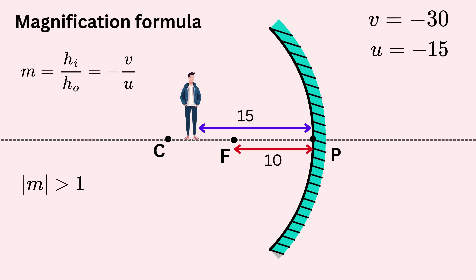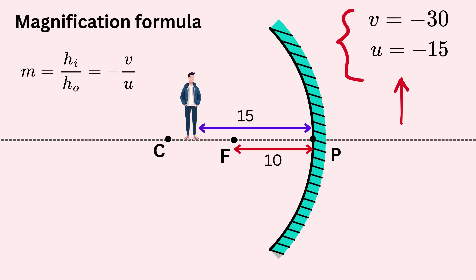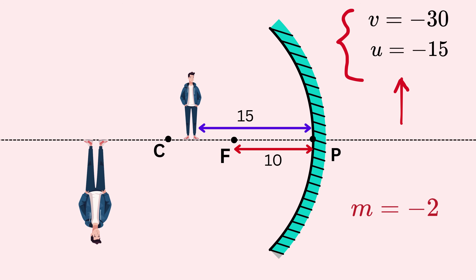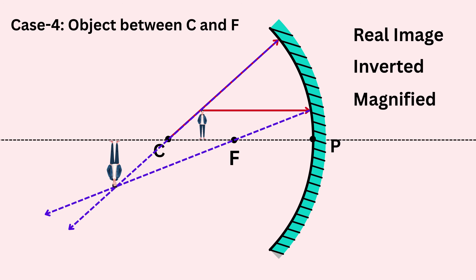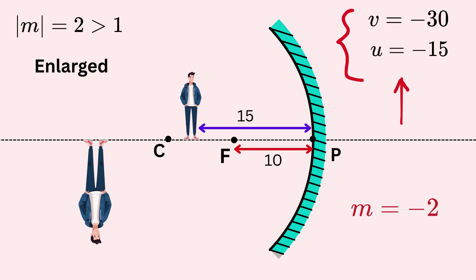If the absolute value of m is greater than 1, the image is enlarged; if less than 1, it is diminished. Continuing the example with v = −30 cm and u = −15 cm: m = −(−30)/(−15) = −2. Since m = −2, the image is real and inverted, and since its absolute value is 2, the image is twice as large as the object — it is enlarged. This matches case four, where the object is between C and F, giving a real, inverted, and enlarged image.